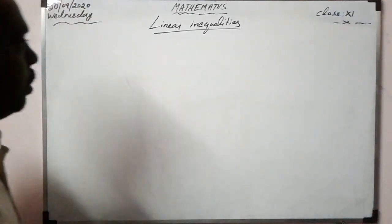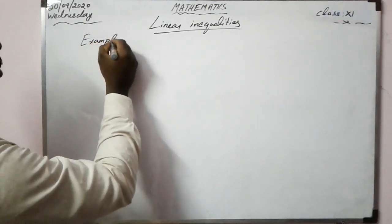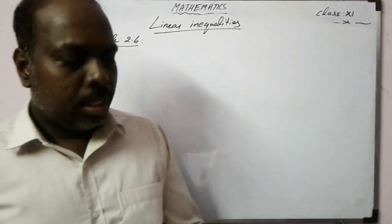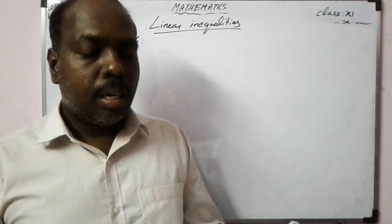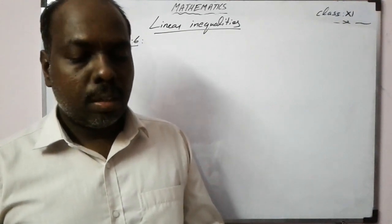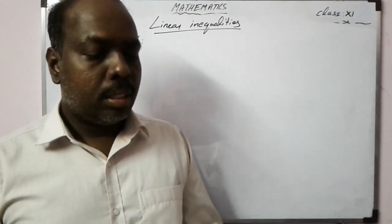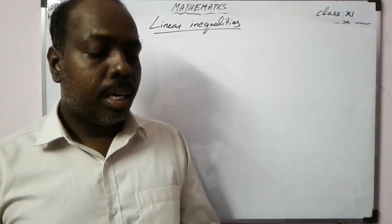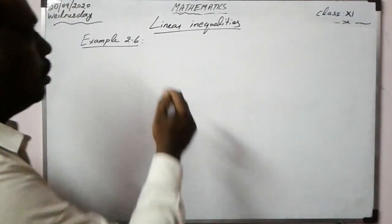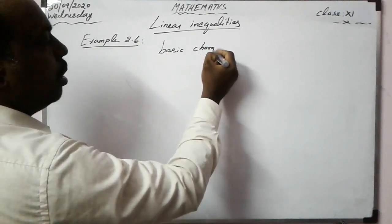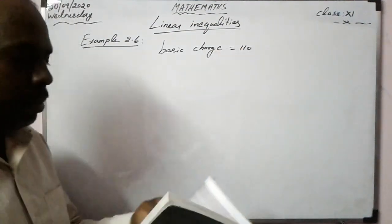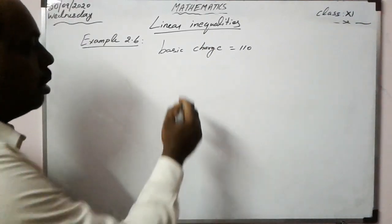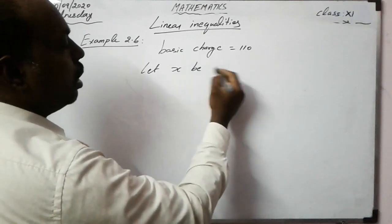Example 2.6. Our monthly electricity bill contains a basic charge which does not change with number of units used, and a charge that depends only on how many units we use. The electricity board charges rupees 110 as a basic charge.